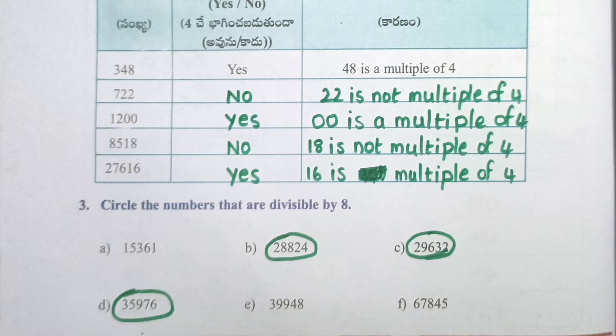8518 — no, 18 is not a multiple of 4. 27,616 — yes, 16 is a multiple of 4. Circle the numbers that are divisible by 8: 28,824; 29,632; 35,976 are divisible by 8.